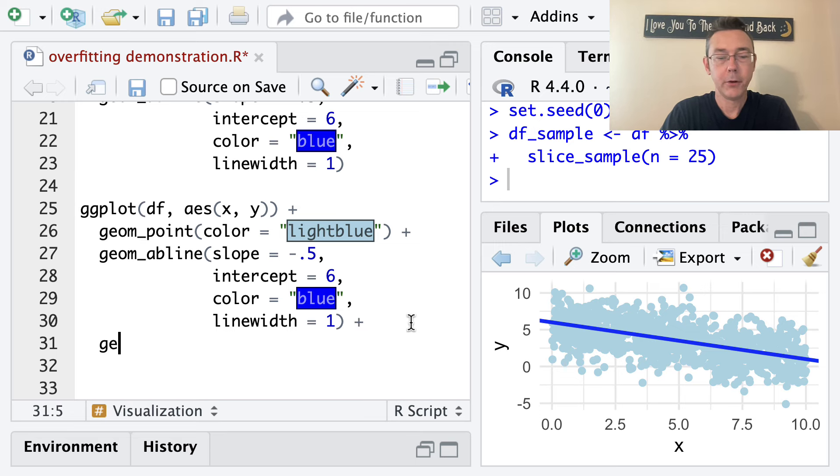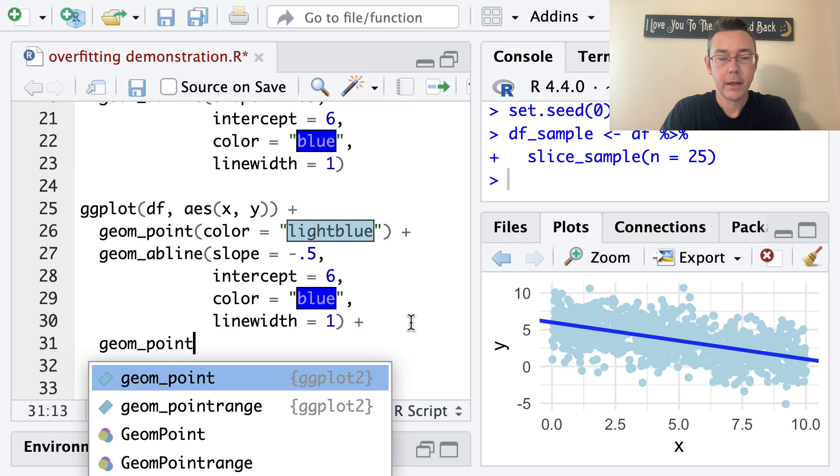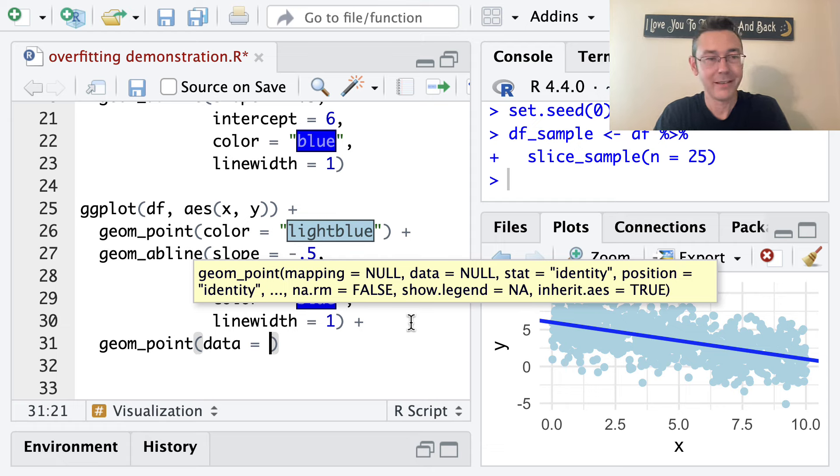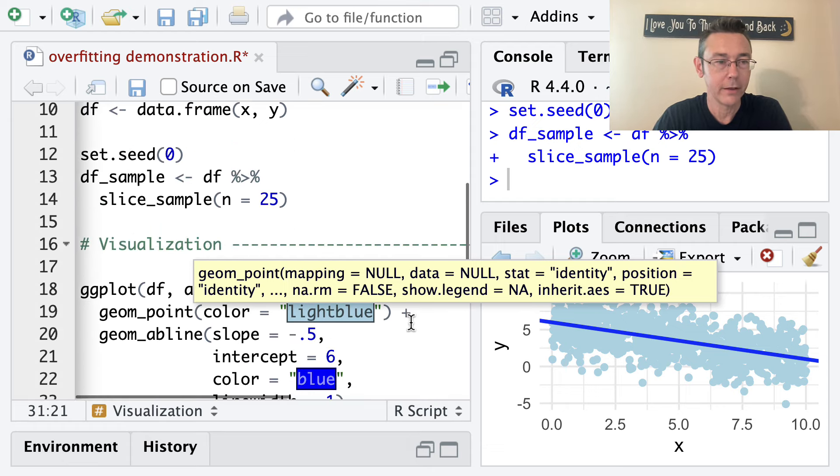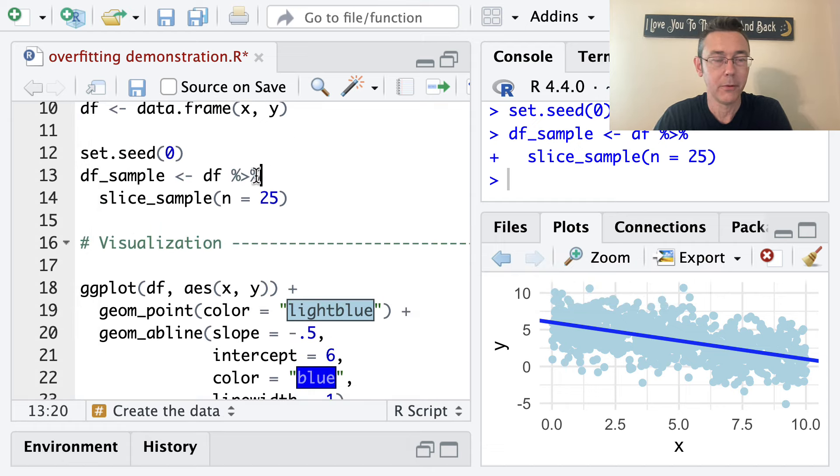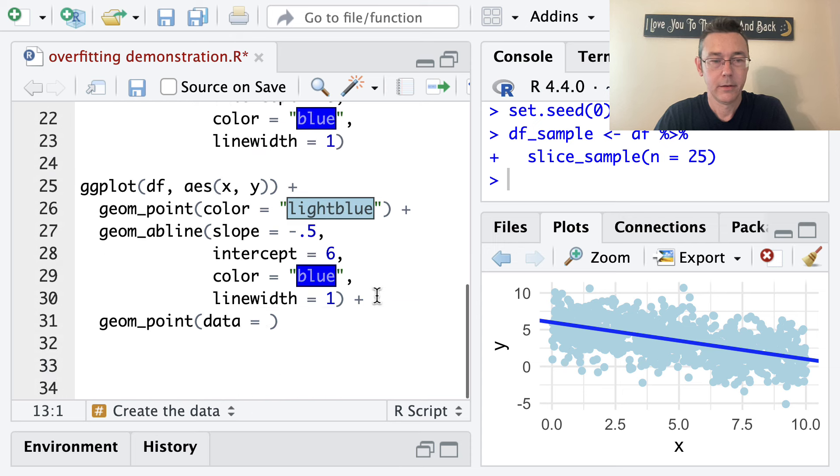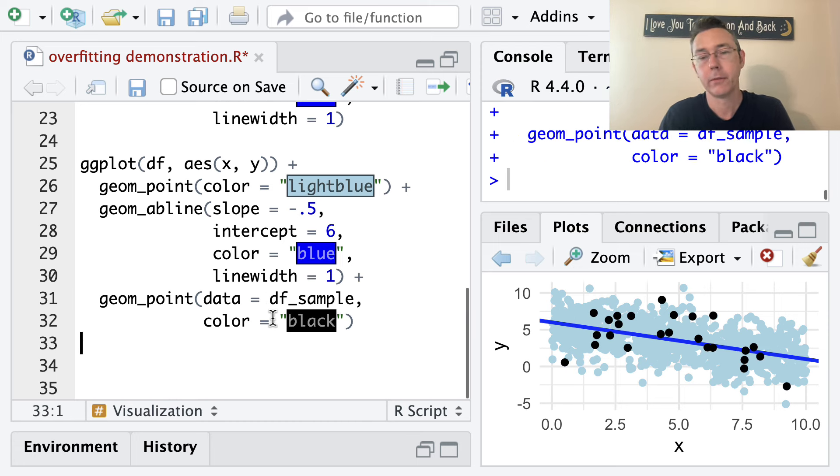I think I'll copy and paste this ggplot so that it stays in my script. But the next thing I want to do is to plot that sample data. So I'm going to put in another geom_point. And the difference is going to be that I have a new data set called df_sample. And let's make sure that my color is black so that these things look different.